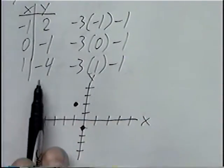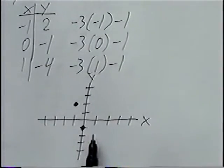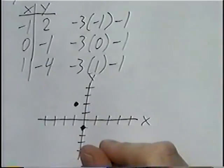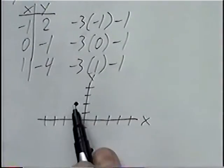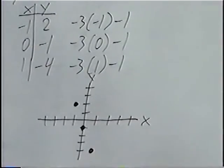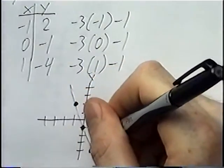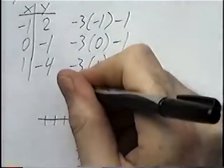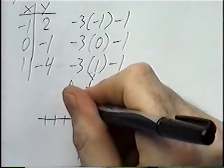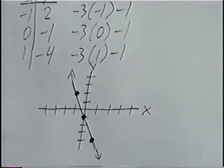The last point is one, negative four: positive one for x, and negative four means four spots down. All three points should line up in a straight line. If they don't, go back and double-check your numbers and your graphing. As long as they line up in a straight line, this is the graph for the equation.